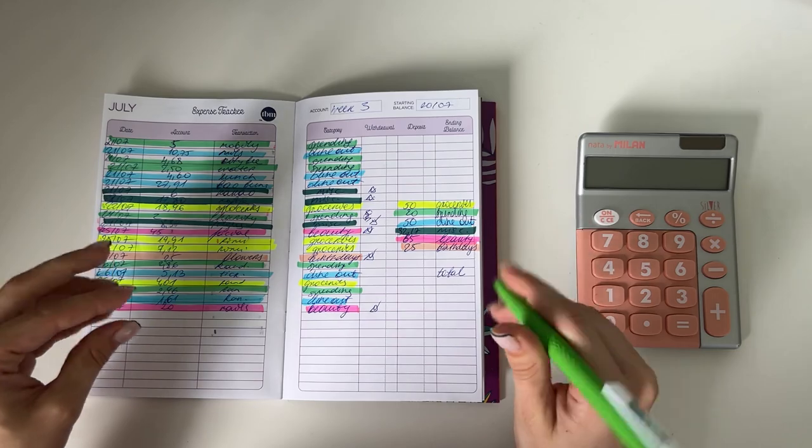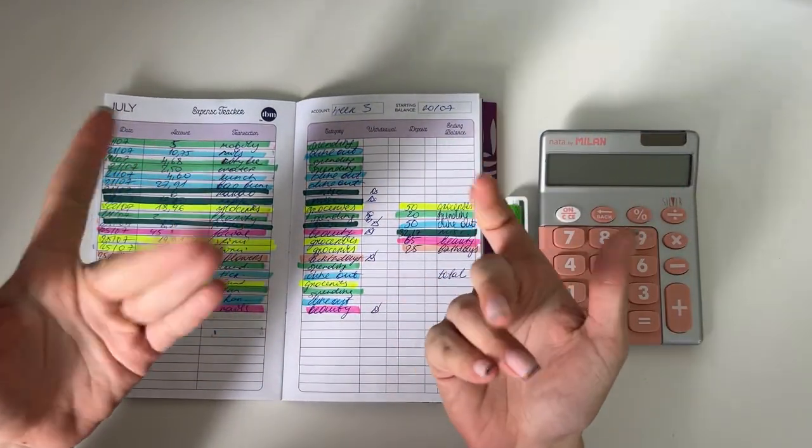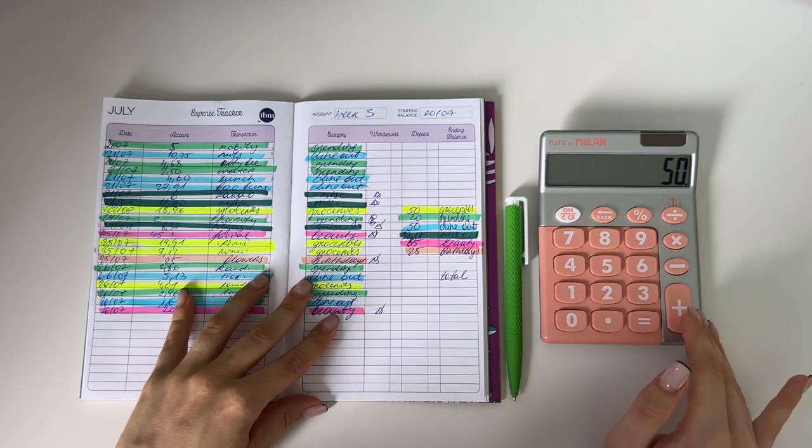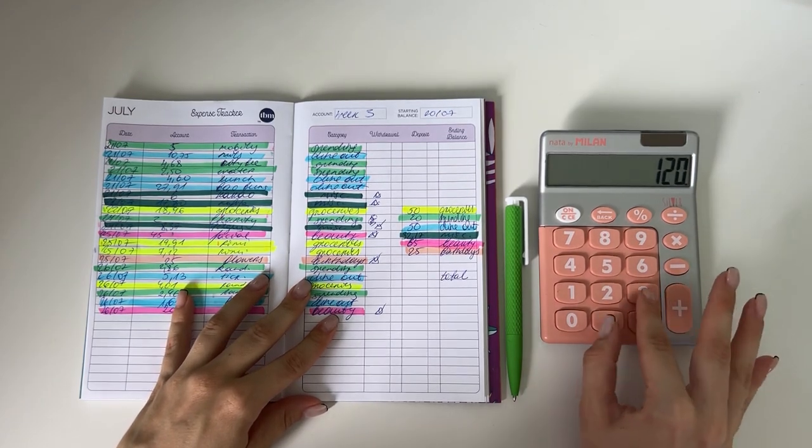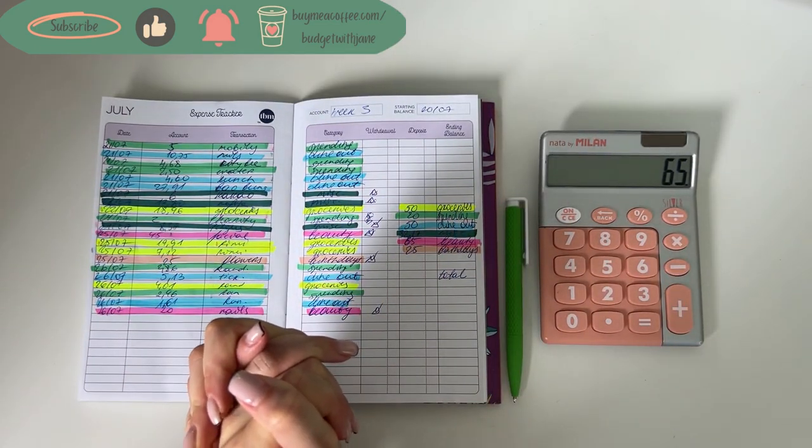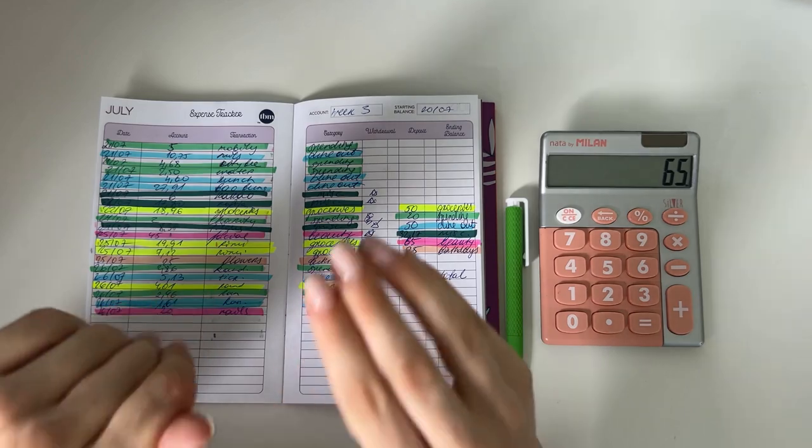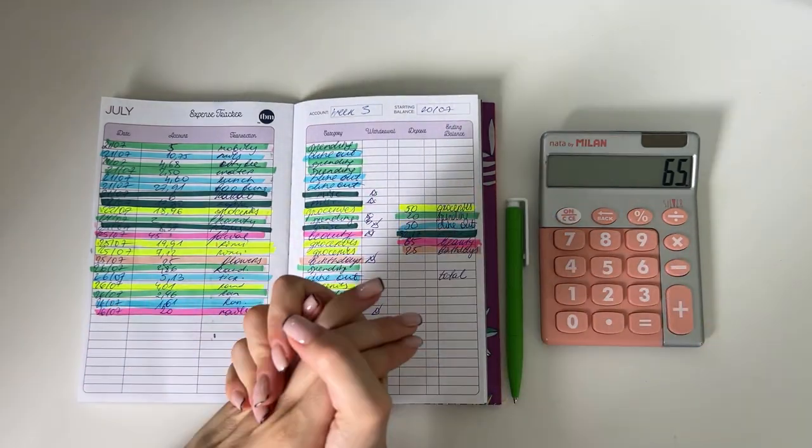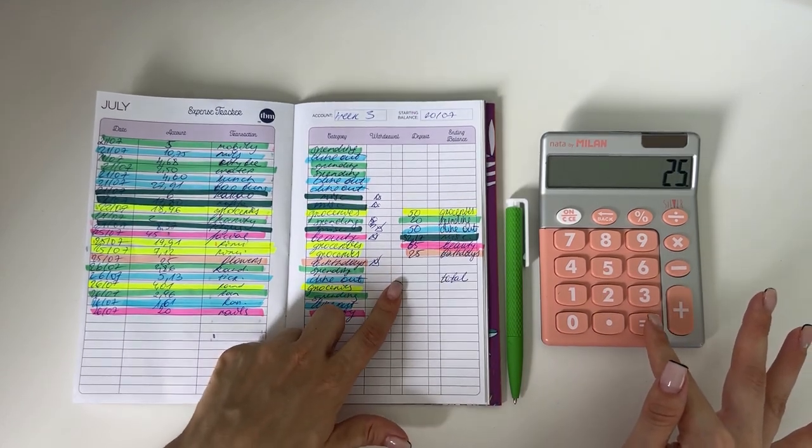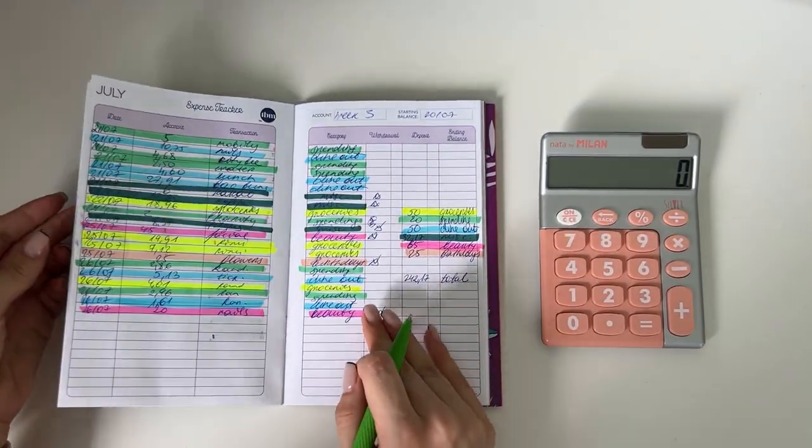Very exciting. As usual we're gonna start with the expenses. I did go a little bit crazy this week with the spending. I overspent and took some money out of my miscellaneous, aka my buffer envelope. Let's go through the expenses. We had 50 in groceries, 20 in spending, 50 in dine out, 32.17 in miscellaneous, 65 in beauty - I did a facial and I'm doing my nails later today. I already took the money out, you'll see them in probably next week's video. And then 25 in birthdays, I bought some flowers for my friend. In total it was 242 euros and 17 cents for week three.